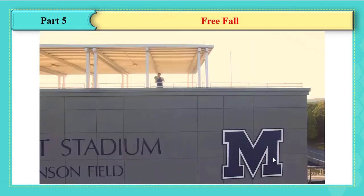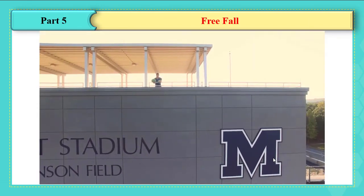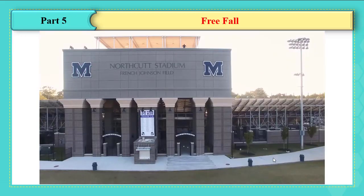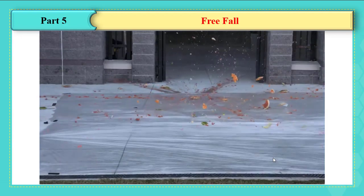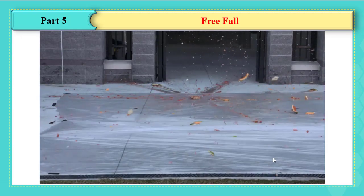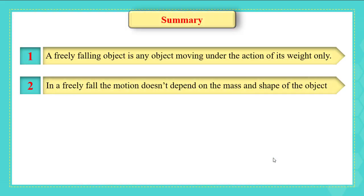Returning to the watermelon and cantaloupe question: why did they reach the ground at the same time even though air resistance exists? Because air resistance is negligible compared to the weight of the watermelon or the cantaloupe. To confirm the main ideas of the lesson, you should practice solving antiderivatives, the examples mentioned in the video, and the application.